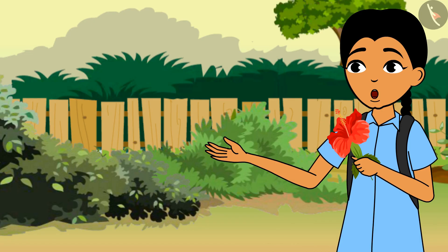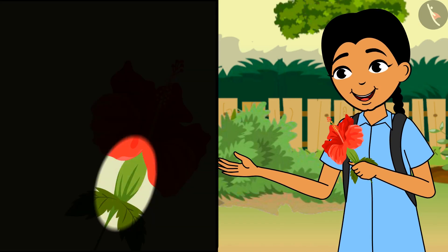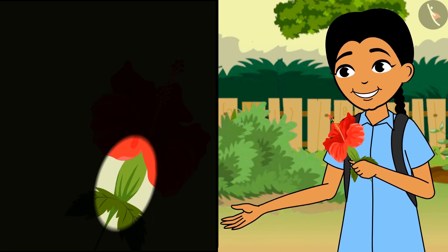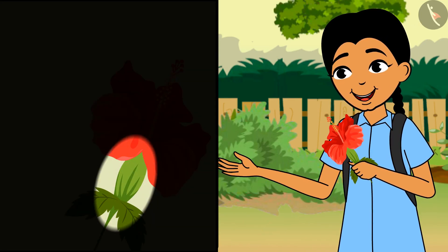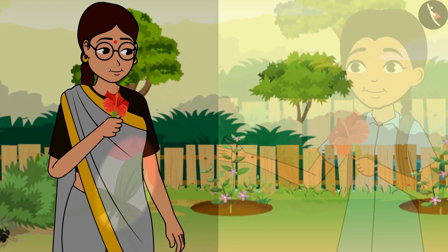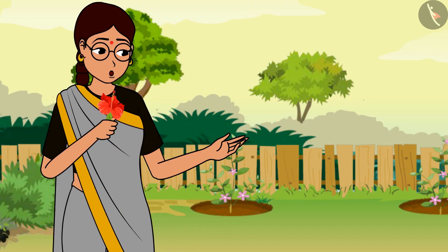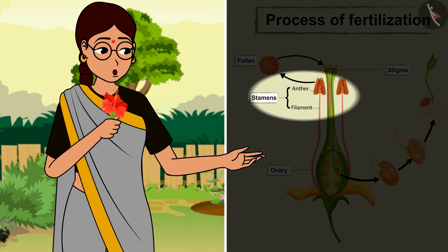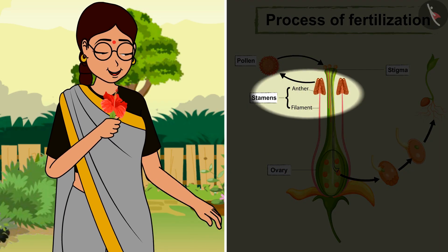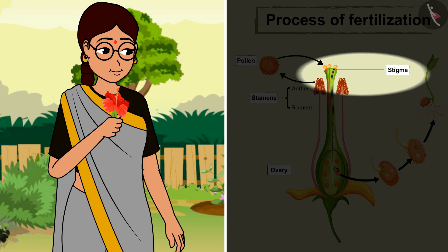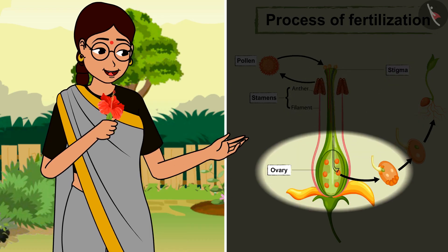There is a bulb-like part in most of them. Look, can you please tell us what it is? Come, let us all look at this flower. This is the anther and this is the stigma. Here is the ovary.